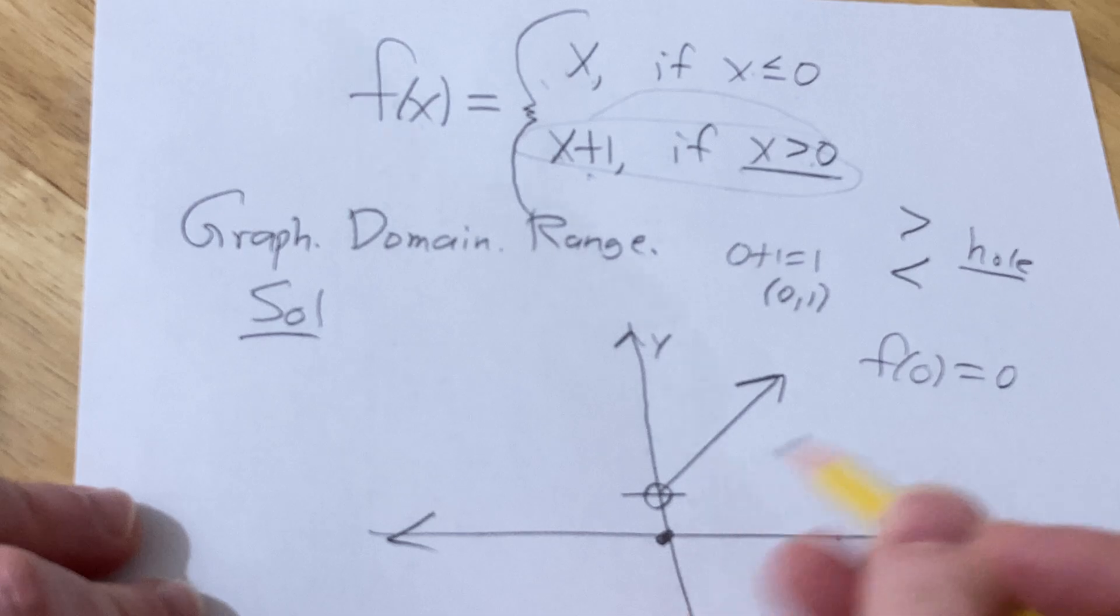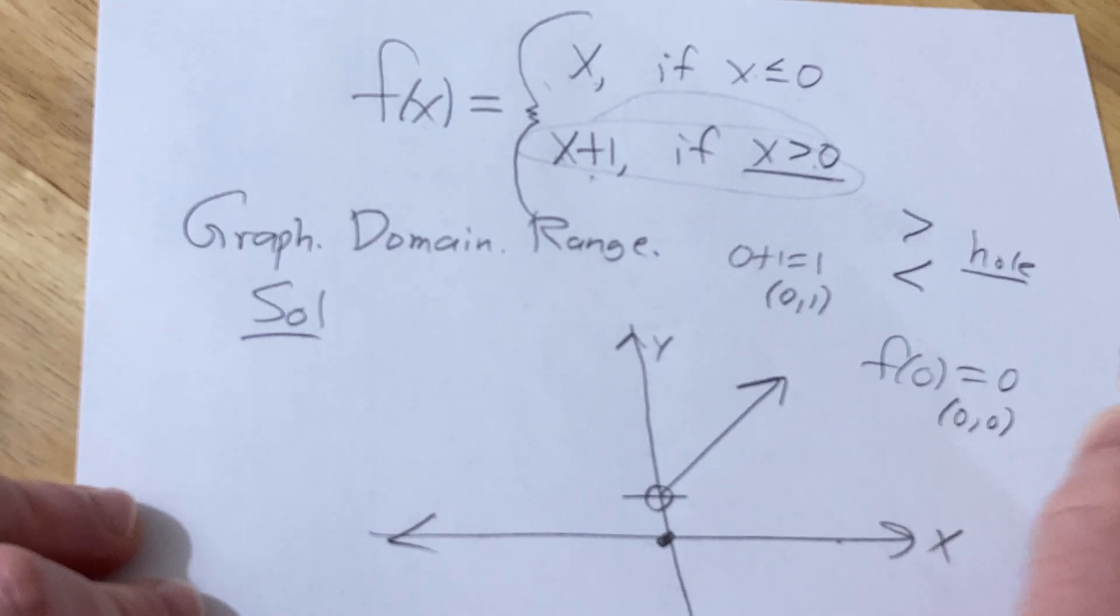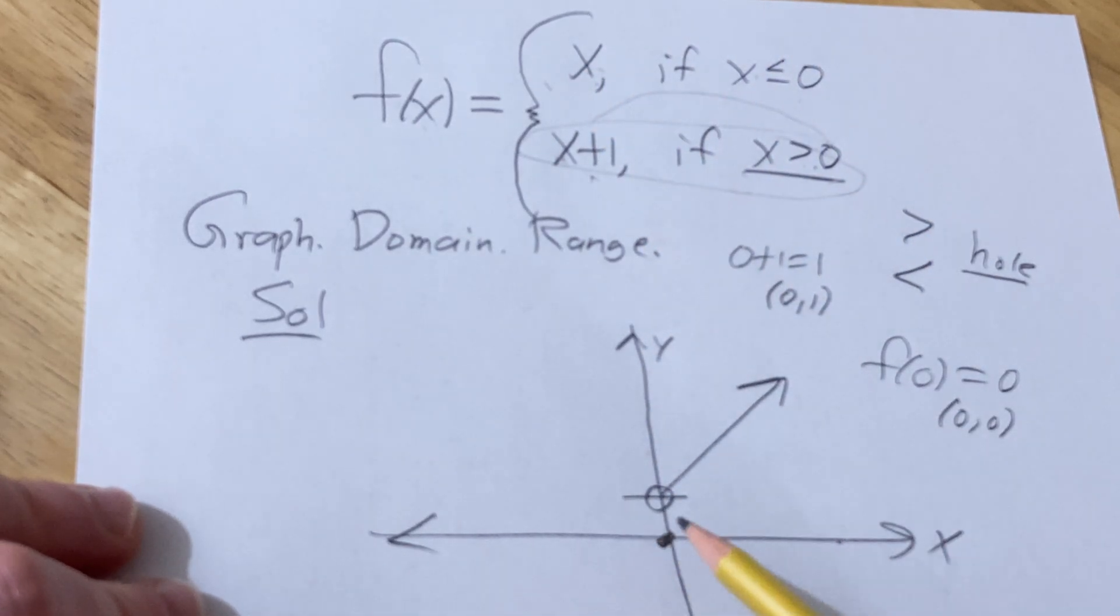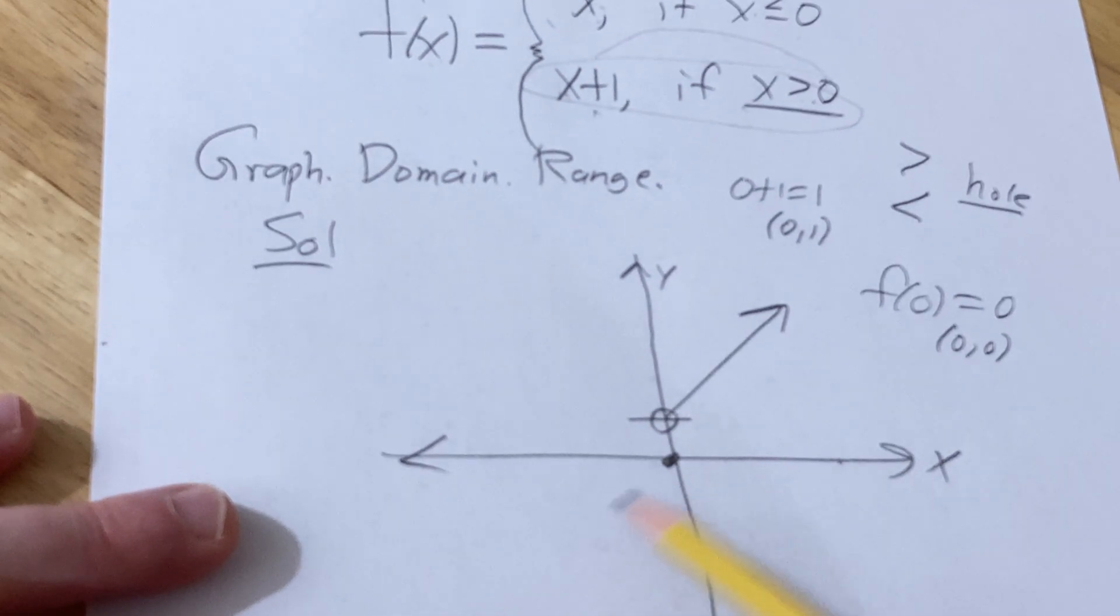So there's a dot here, right, because this would be the point zero comma zero. This is also a straight line with a positive slope, so it's going up. Okay, and we only draw it over here because we only care about x is less than or equal to zero.